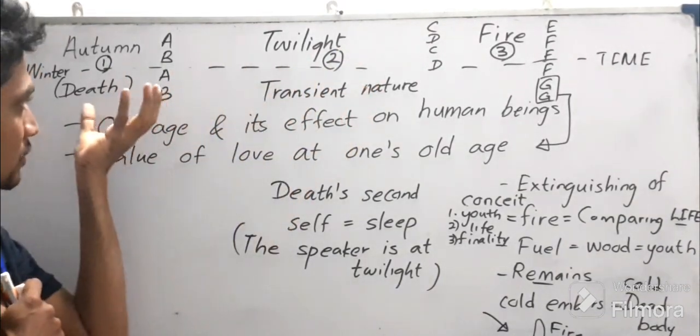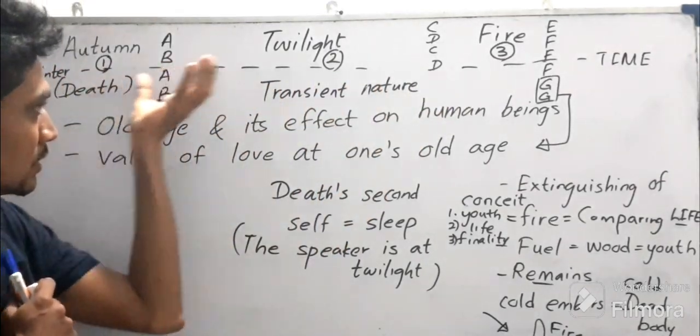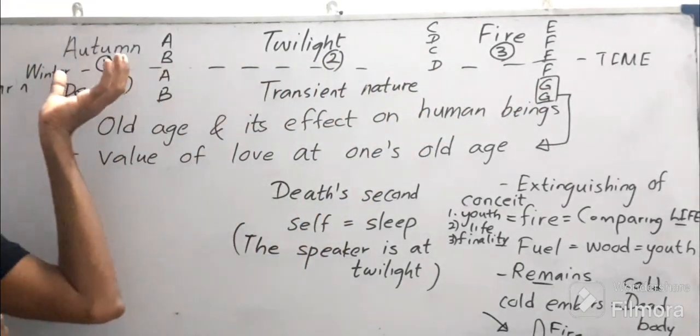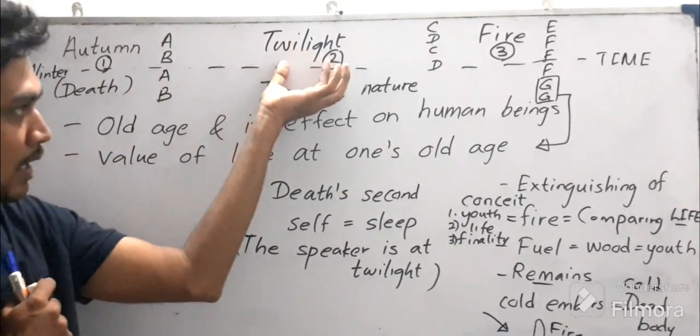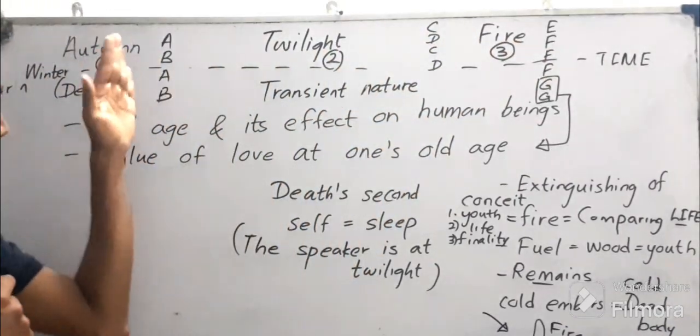This sonnet focuses on three major metaphors: autumn, twilight, and fire are the three main metaphors.